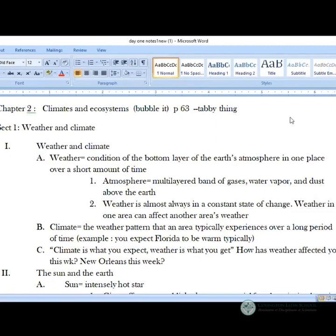So chapter two is all about climate and ecosystems. So make a big bubble, highlight that. If you have any tabby things with you, put a tab there. That way anytime I talk about chapter two, you can get there really fast. And then make a little bubble for section one because as you are starting to figure out, I think.